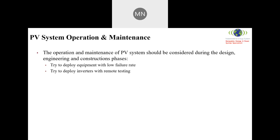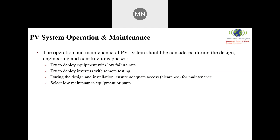During the design and installation phase, you should always ensure you have adequate clearance and access for maintenance. In multiple situations I've noticed systems installed with zero maintenance capability because you simply cannot access them. Select low-maintenance equipment and parts. Always make sure you build the PV system to the relevant local standard, because every country has different requirements due to weather, wind, sun, and dust.